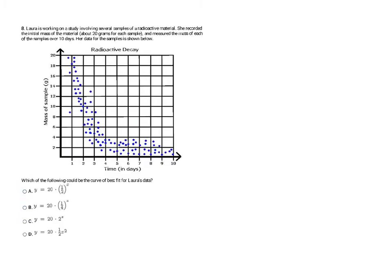This next problem takes some familiarity with an exponential equation. This is an exponential scatter plot because it starts decreasing very rapidly and then starts to level off. The problem states an initial mass of about 20 grams for each sample, so there's going to be a 20 out front like in every example here. I can already tell by the shape it's exponential, meaning I'll have an exponent of X — so I know right away it's not going to be D.